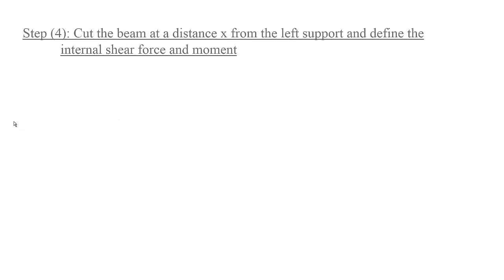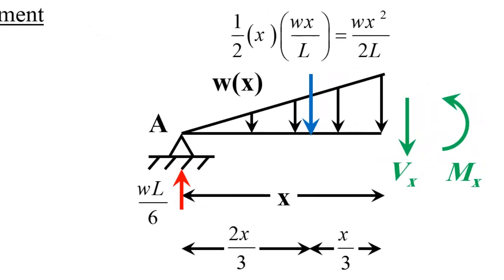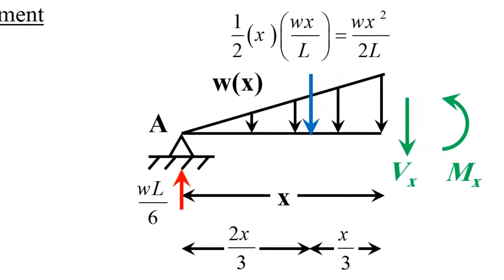Now we cut the beam at distance X from the left support and define the internal shear force and moment. This is the figure. We have VX, MX, and the support reaction WL over 6.